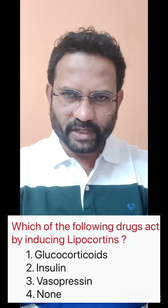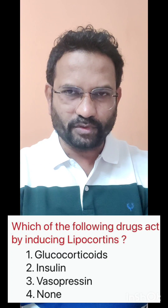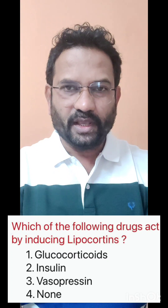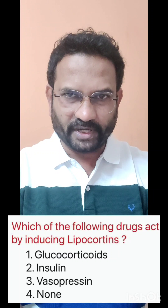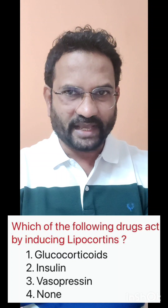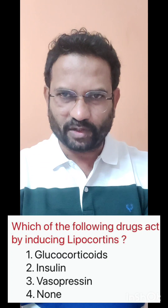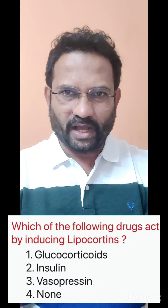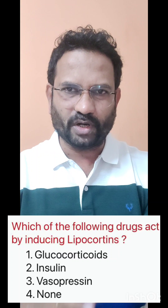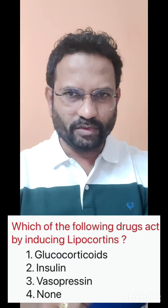Now all the options given are hormones. Glucocorticoid is a steroid hormone, insulin is a peptide hormone, vasopressin is antidiuretic hormone. The answer for this question is glucocorticoids.